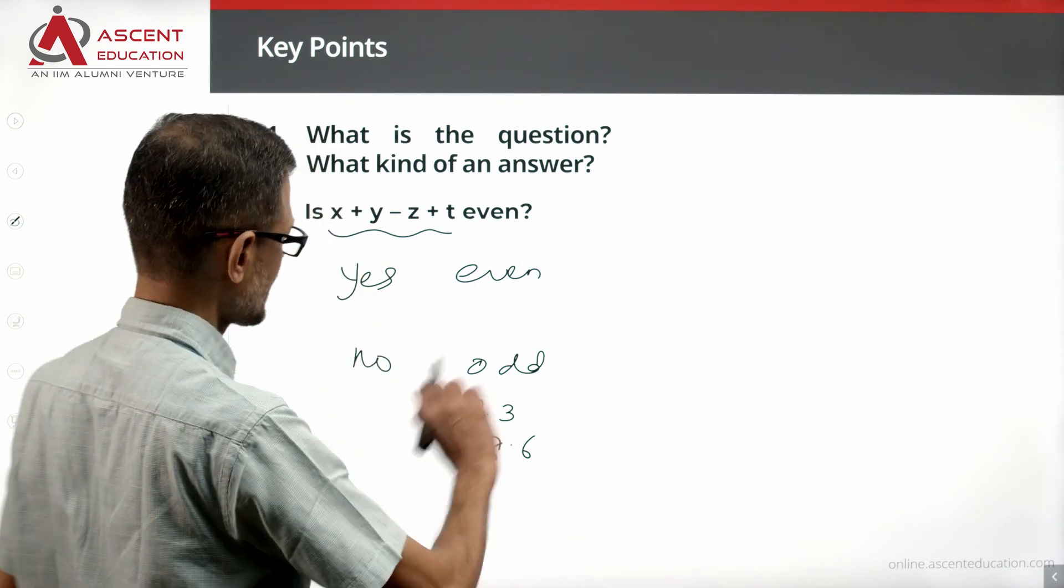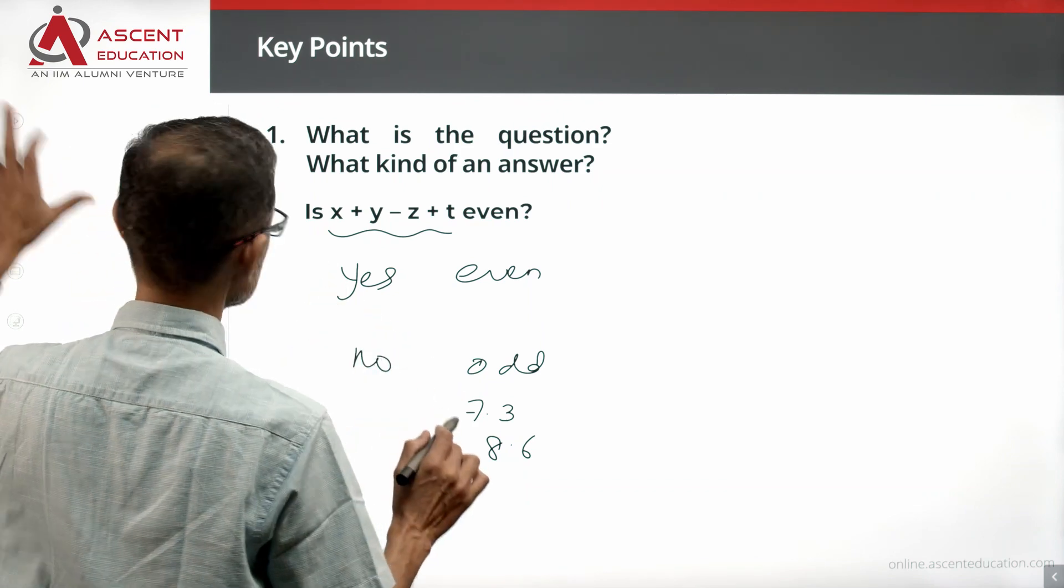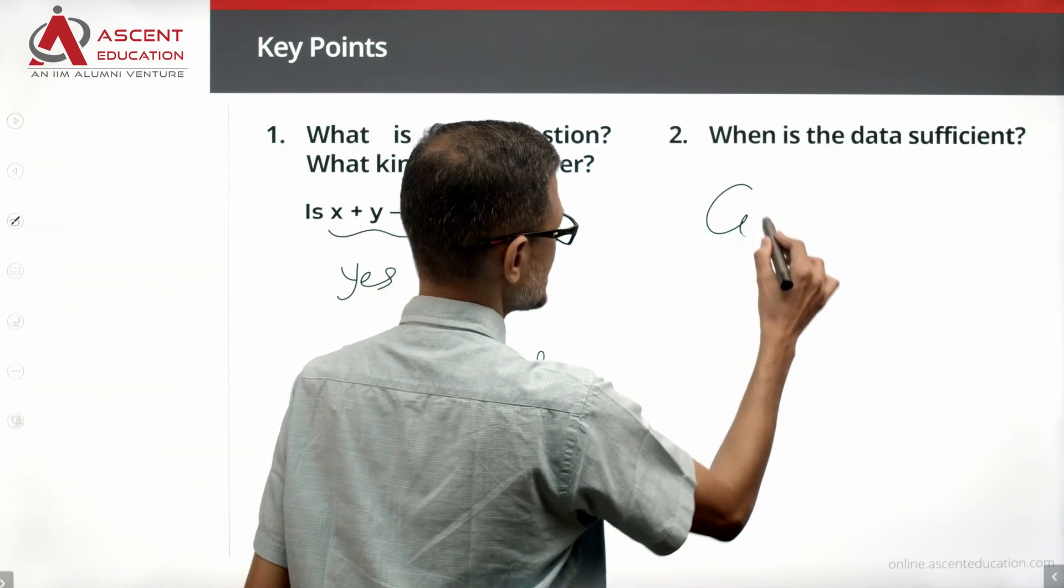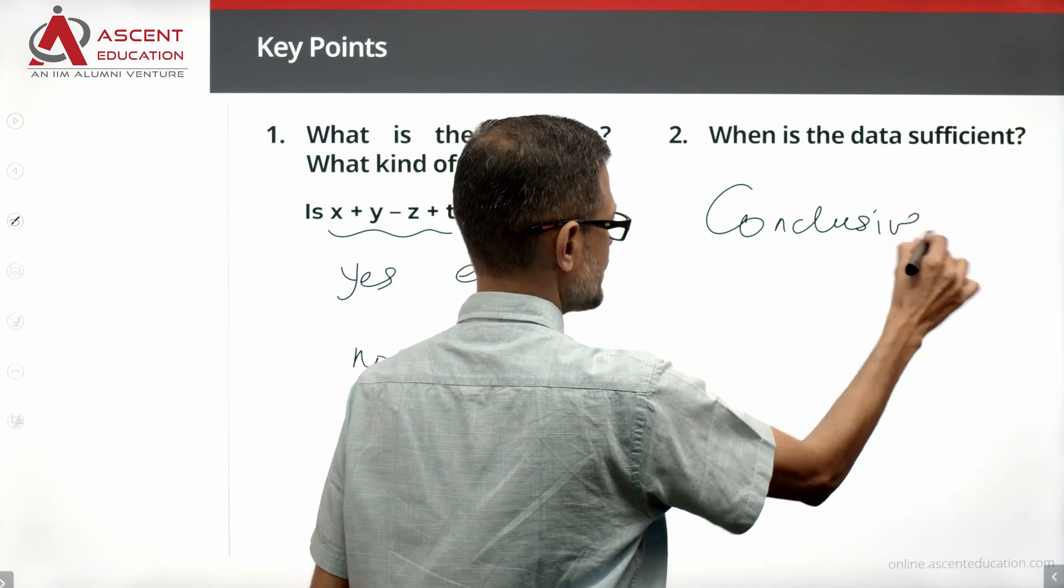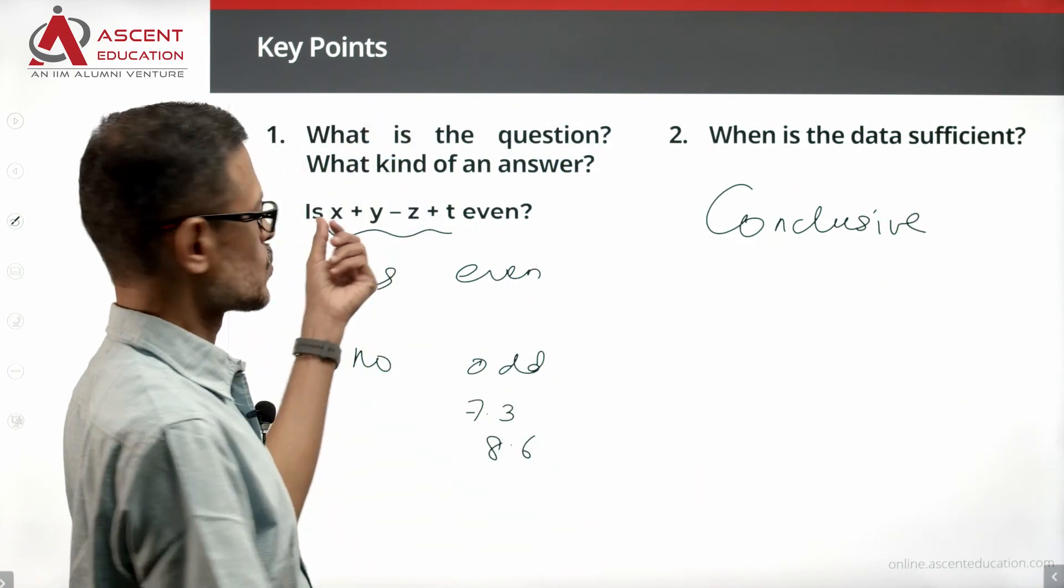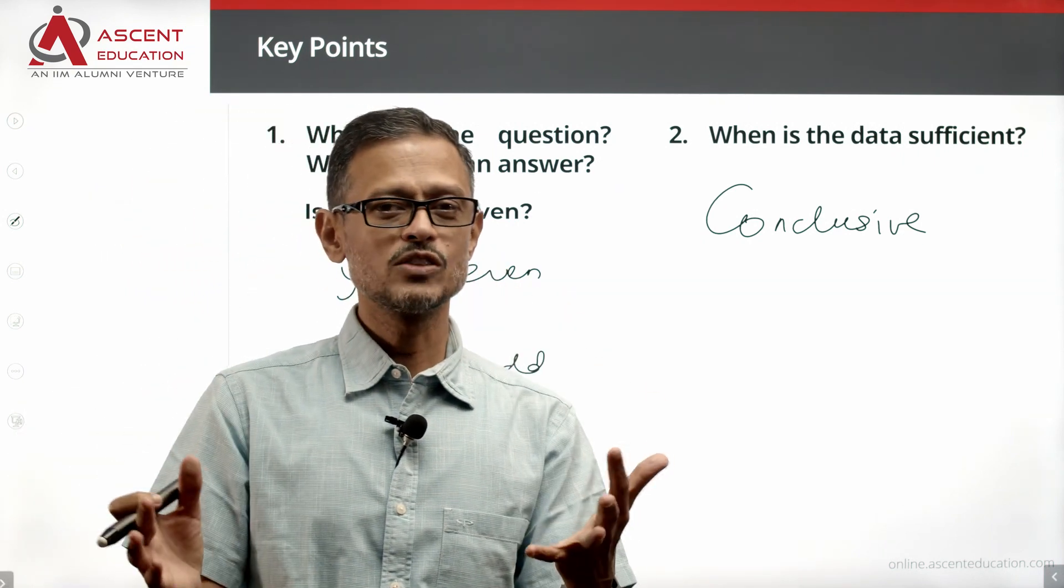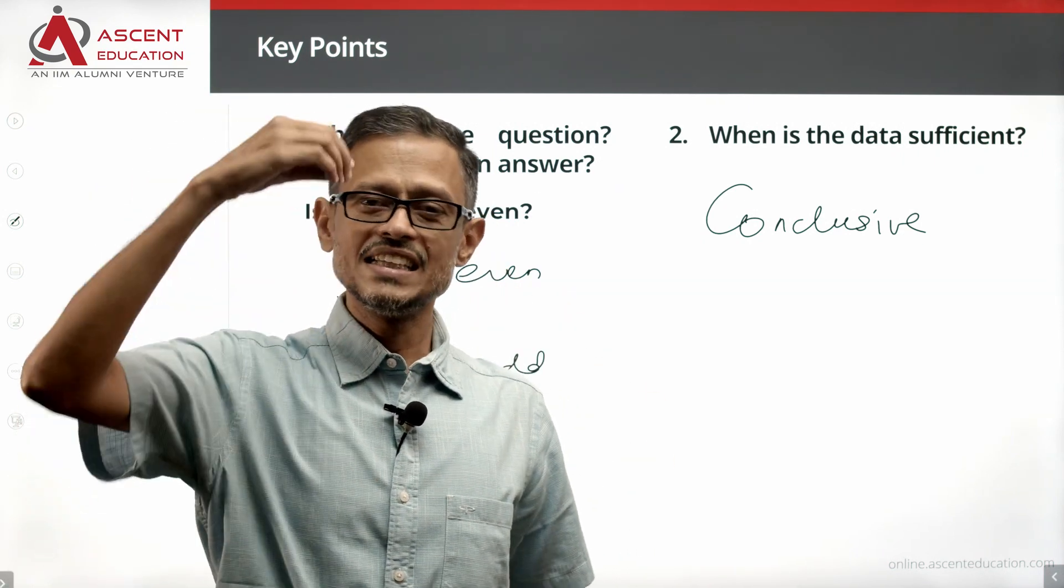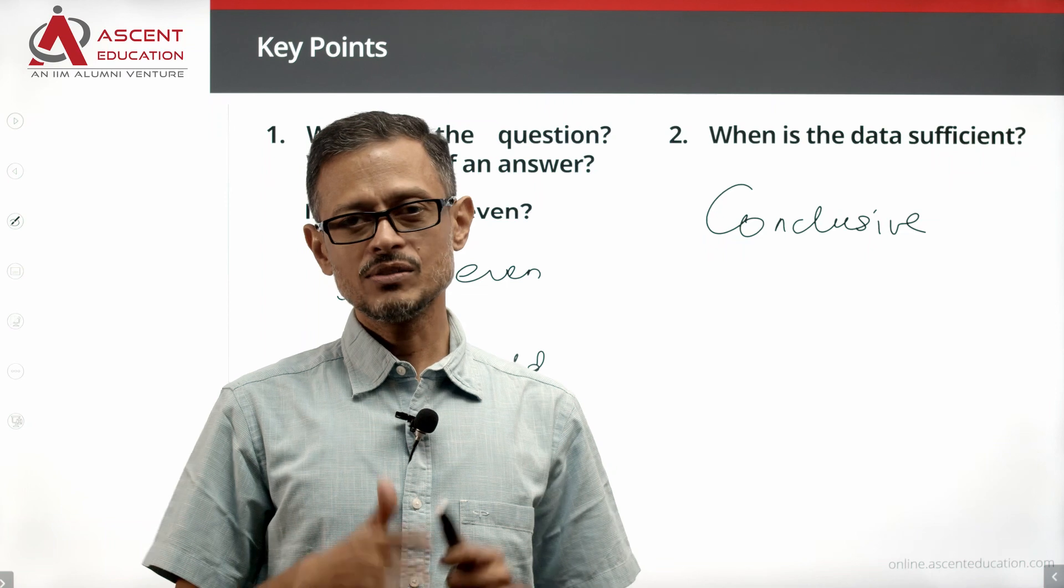Keep that perspective in mind. So when is the data sufficient? In any yes/no question, the data is sufficient when we have a conclusive answer, a definite value. If you can say x plus y minus z plus t is even, data is sufficient. If you can say it's not even, data is sufficient.